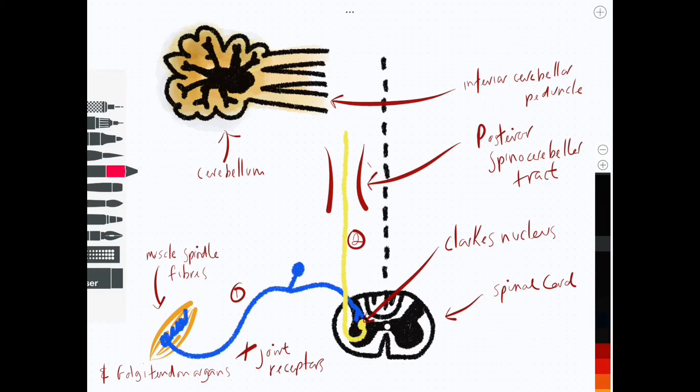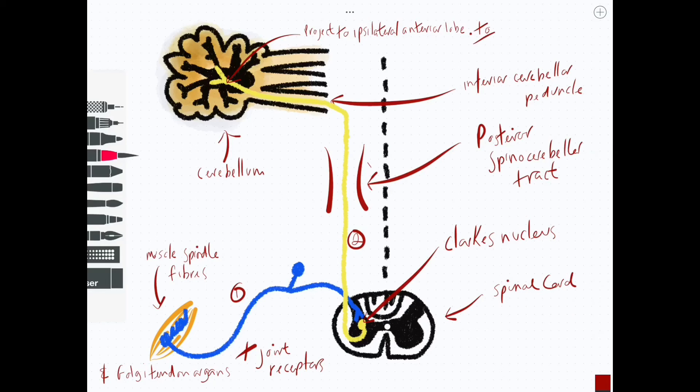So quick summary then: we have a two-neuron pathway, entirely ipsilateral, entering the cerebellum via the inferior cerebellar peduncle and going off to structures called the vermis and the paravermis. Now would be a good time to compare the posterior spinocerebellar tract with the anterior spinocerebellar tract.